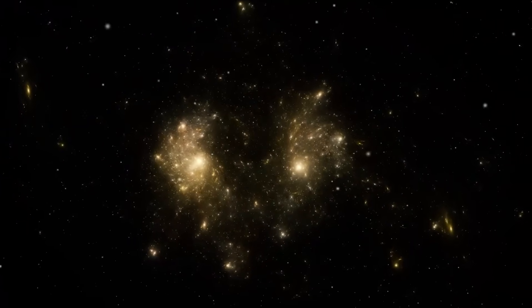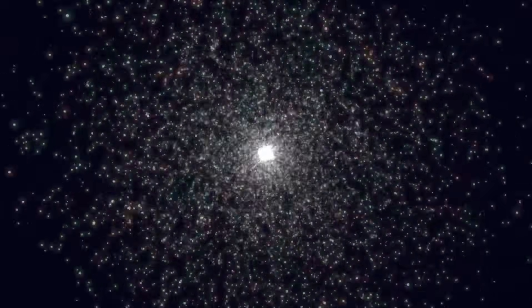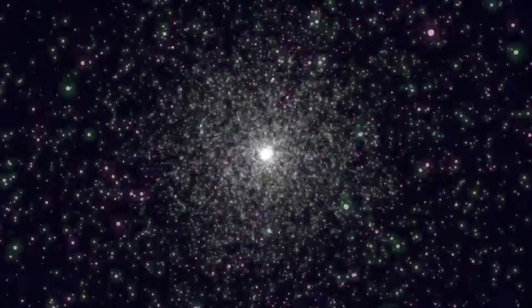One method used to study the distribution of matter is gravitational lensing, a phenomenon in which the gravitational field of a massive object, such as a galaxy cluster, bends the light from a more distant object.